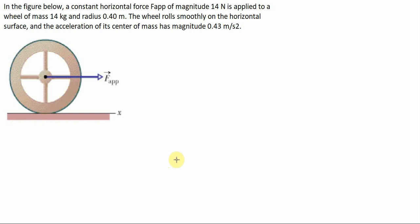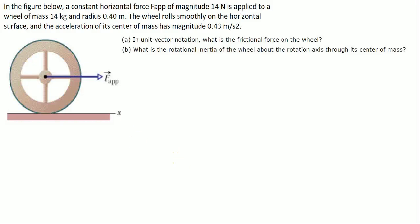Alright, got another one. So we're looking for, in unit vector notation, what is the frictional force on the wheel? Right off the bat, they give us that there is a frictional force, so this is going to be the force of friction, and that's also going to be exerting a torque because it says it's rolling smoothly. The acceleration of the center of mass — basically we're given this applied force.